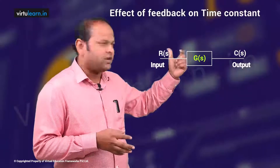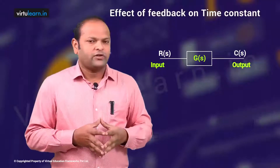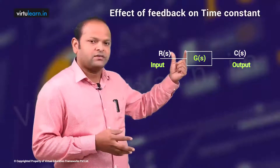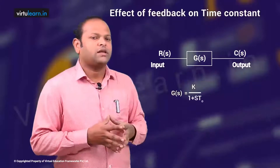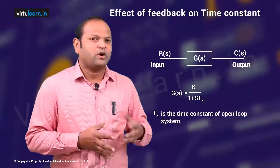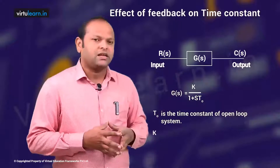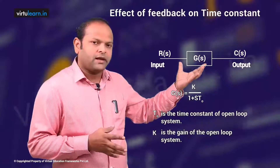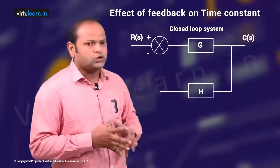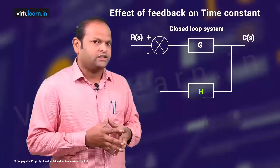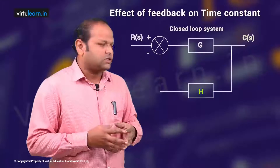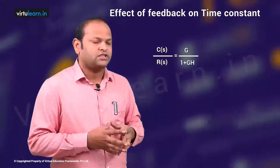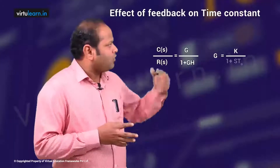For the non-feedback open loop system, the transfer function G(s) is taken as K divided by (1 + s·T₀), where T₀ is the time constant and K is the gain of the open loop system. The time constant is simply T₀. Now for the closed loop with unity feedback (H = 1), the closed loop transfer function C(s)/R(s) = G/(1 + GH). Substituting G = K/(1 + s·T₀) with H = 1.